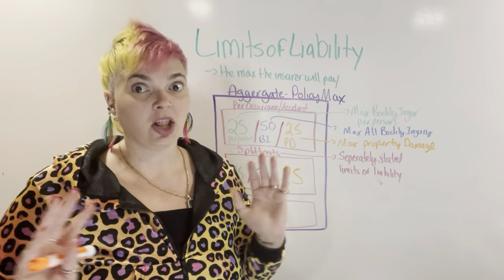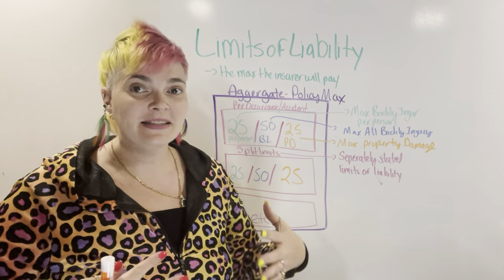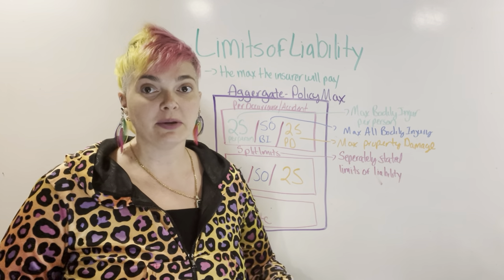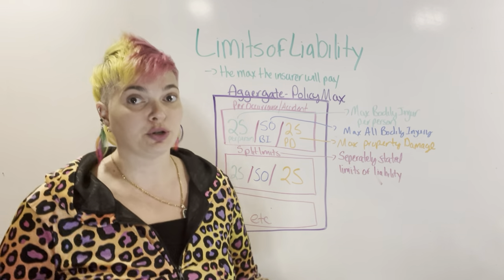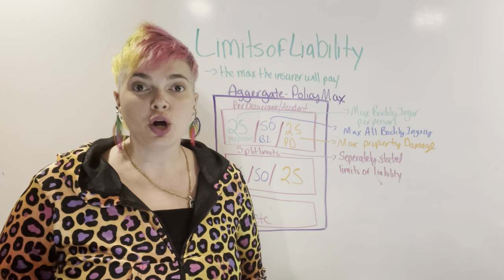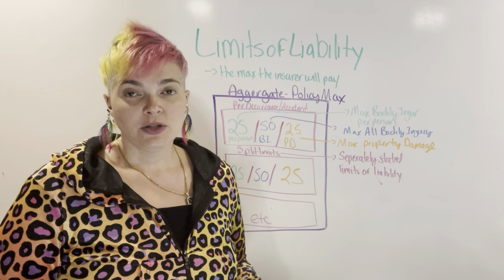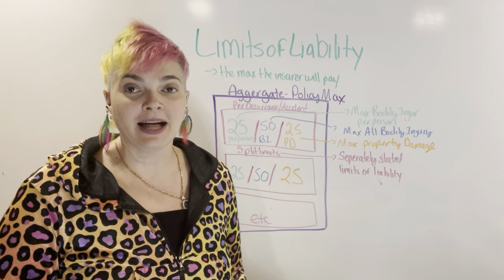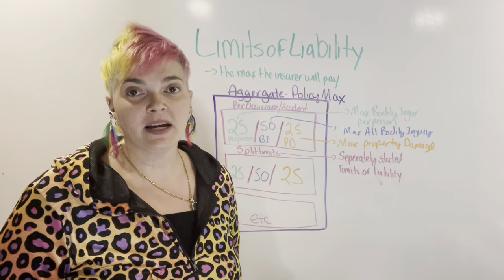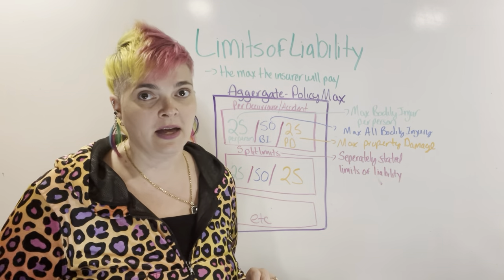Limits of liability can mean a lot of things. There are many limits, but limits of liability is the max the insurer will pay for whatever it is we're talking about. So there's a limit of liability on every accident, on each person, and for property damage. Everything has its own limit of liability — that simply means what is the max they're going to pay for that one thing.